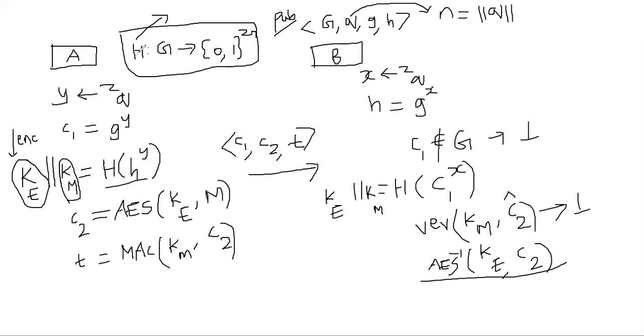If the function H is a truly random function, like a so-called random oracle, then you get a CCA secure scheme because the attacker, in order to break the scheme, must compute C1 power X. What is C1? C1 is nothing but G power Y. So the attacker knows G power Y, which is publicly sent. It is nothing but C1. So he knows this.